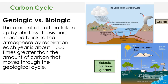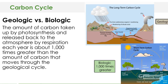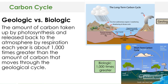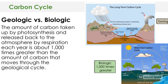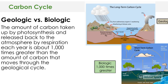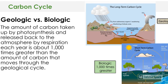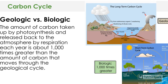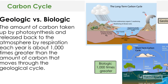To wrap this up — the geologic versus biologic carbon cycle: the amount of carbon taken up by photosynthesis and released back to the atmosphere by respiration each year is about 1,000 times greater than the amount of carbon that moves through the geological cycle. We can see that is a much more rapid turnover of carbon.